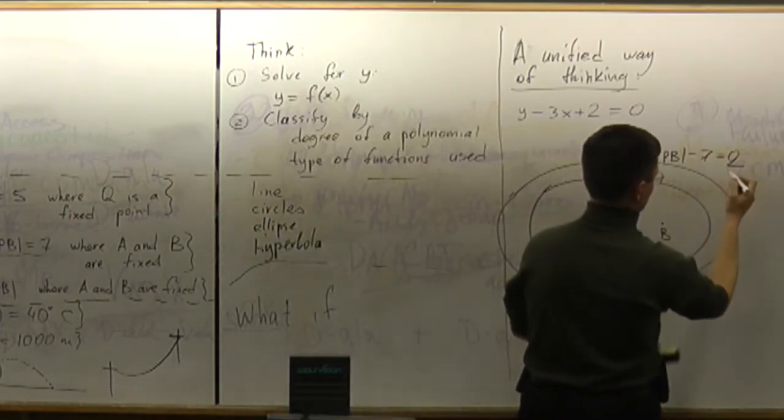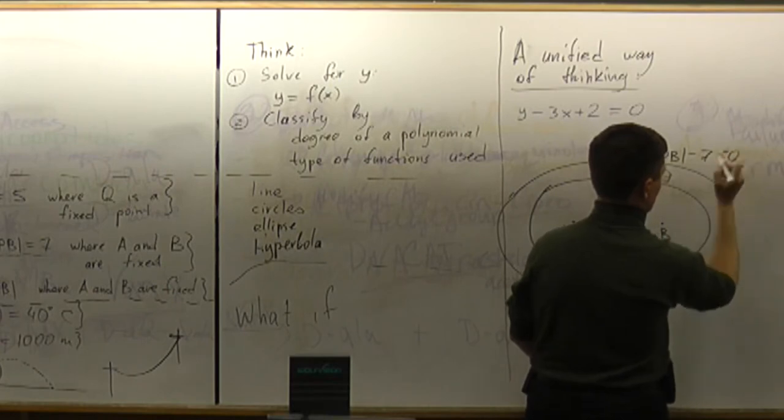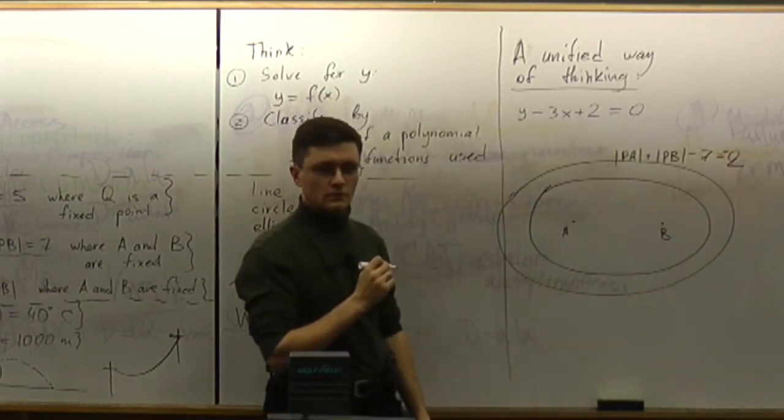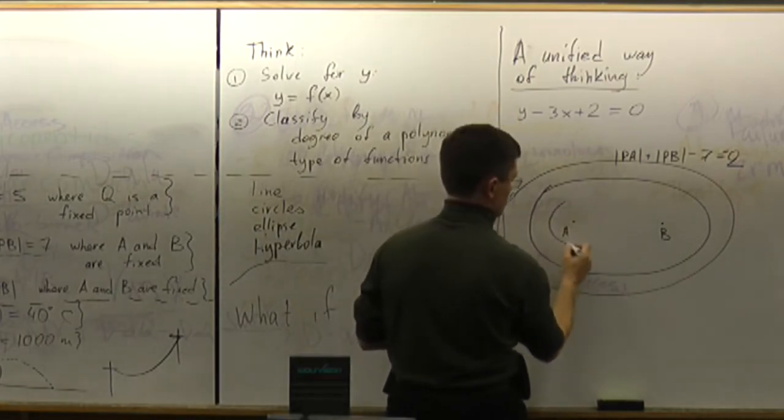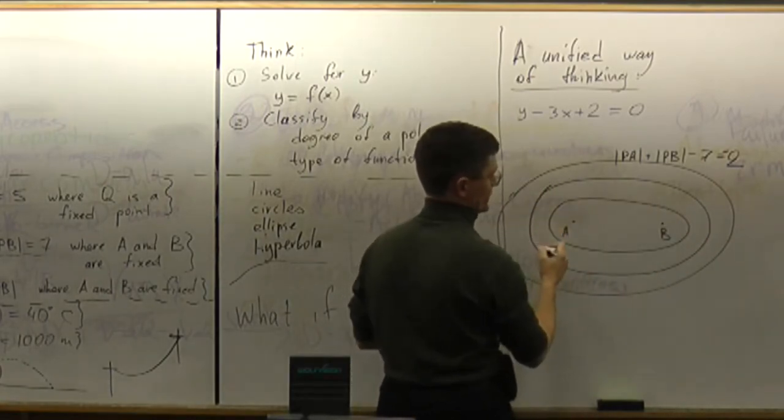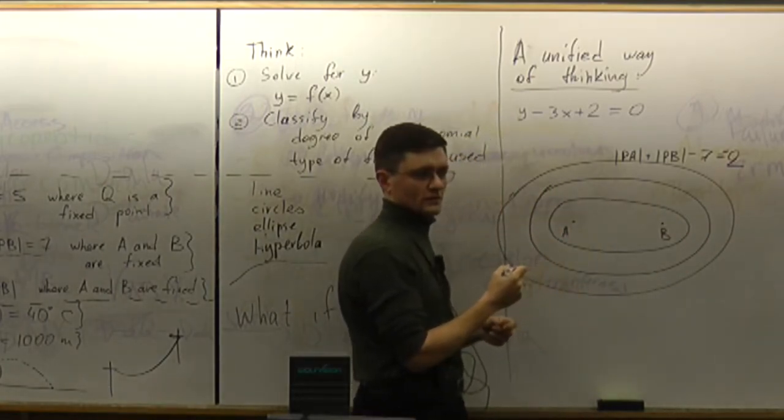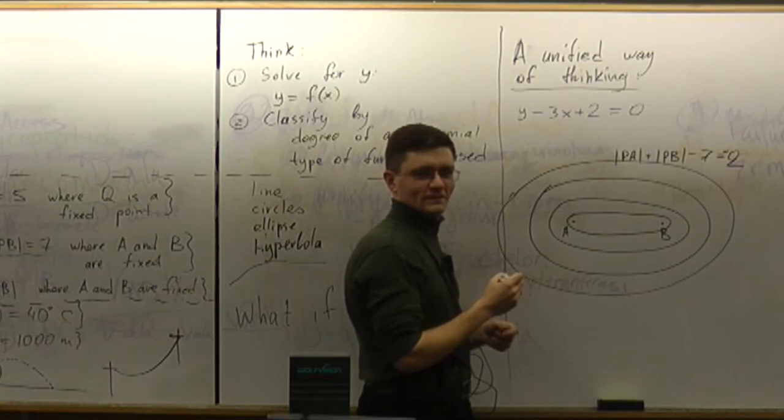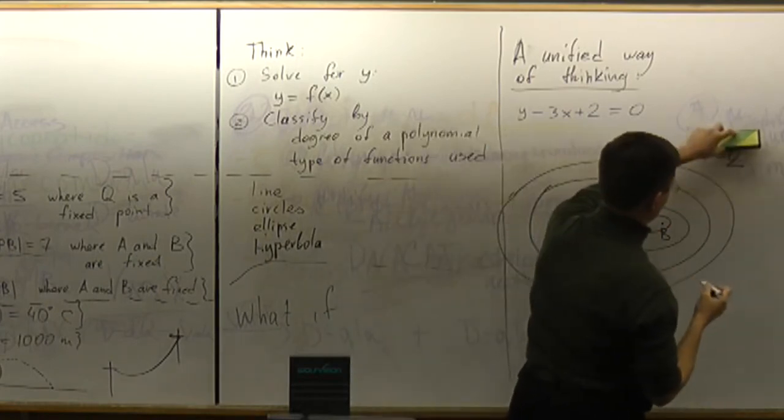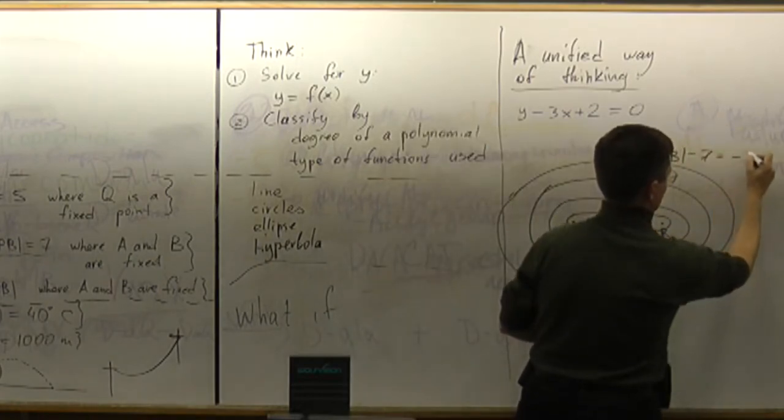What if it is not 2 but negative 2? What about that ellipse? It will be smaller, sitting inside. And what if I make that number even smaller? And even smaller. And what about negative 7?